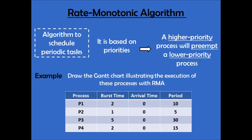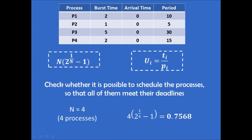We see that we have the burst time for each of the four processes, and in this case they arrive at the same time. We also have the period for the four processes, which is how often these processes need to be executed. The first thing we have to do is check whether it is possible to schedule the processes so that all of them meet their deadlines. In order to do this, we have to consider the two equations shown in the white boxes. In this case, n is equal to 4, because we have four processes. If we plug 4 into the equation, we get 0.7568.